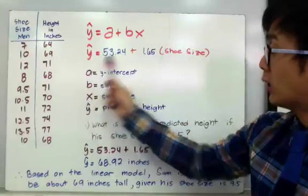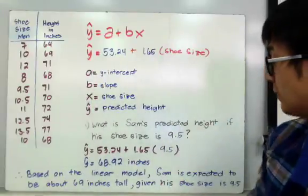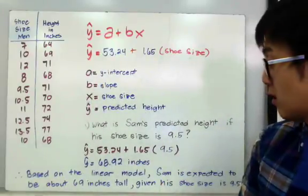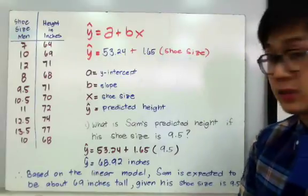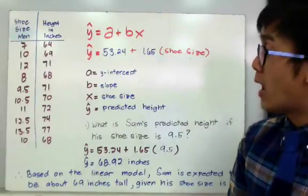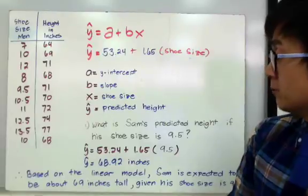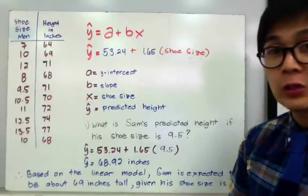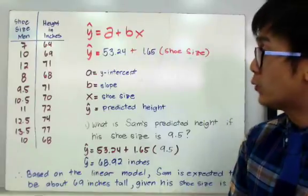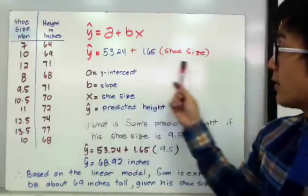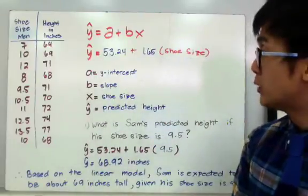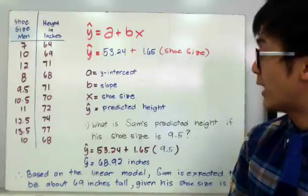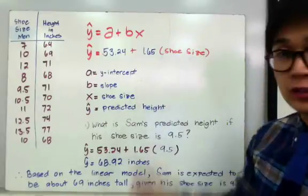Based on our linear model, Sam is expected to be about 69 inches tall given his shoe size is 9.5. How are we going to make sure this particular prediction is accurate? We still don't know at this point in time, but what we know is that we are using this linear model to predict a man's height using their shoe size.